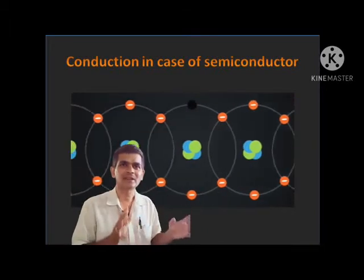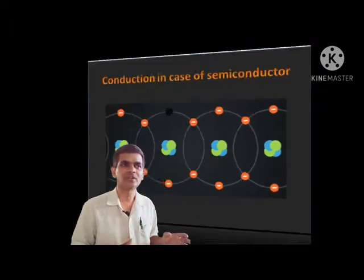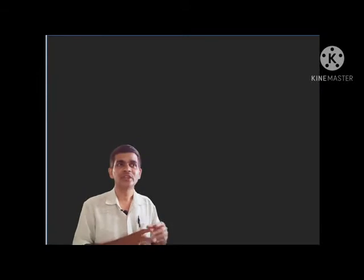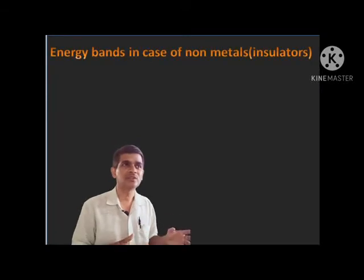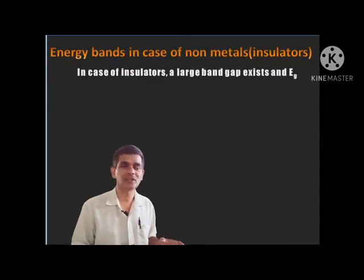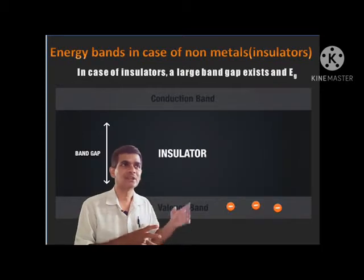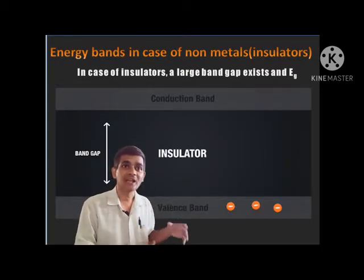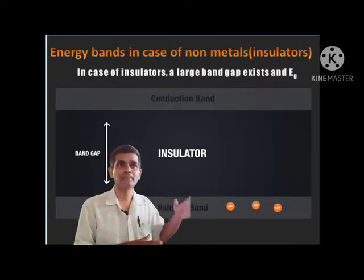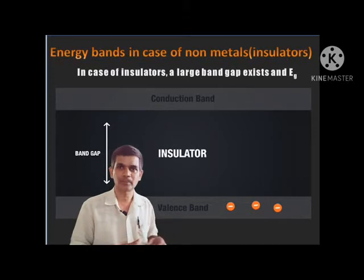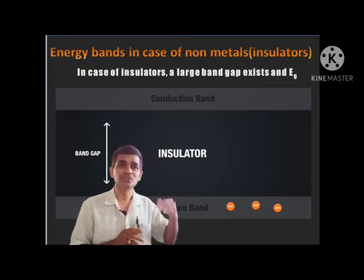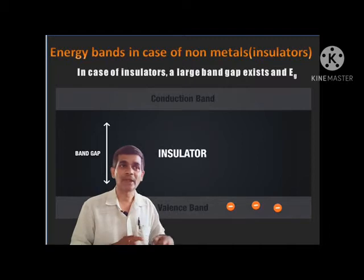In case of insulators or non-metals, this energy band diagram shows there will be a large energy gap existing between the valence band and conduction band. Due to that reason, it is difficult to transit electrons from the valence band to the conduction band.